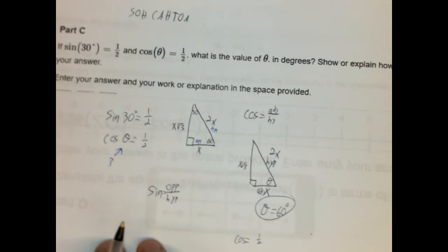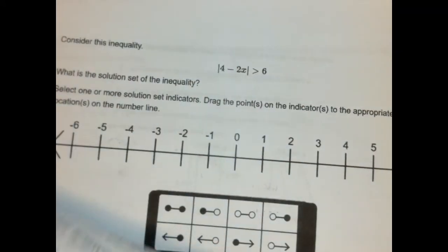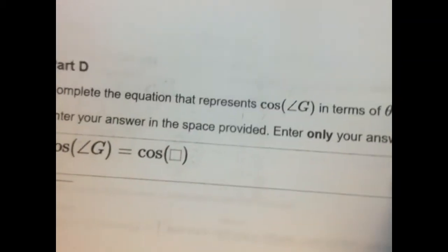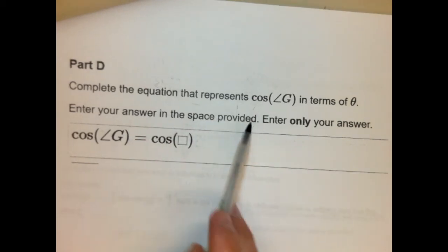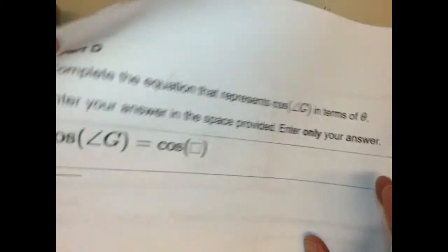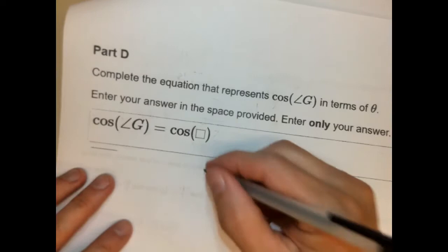Again, it requires a fairly good understanding of special right triangles and trigonometry. So, all right. Let's look at the fourth part. Zoom out a little bit here. There you go. Complete the equation that represents cosine of G in terms of theta. Enter your answer in the space provided. Enter only your answer. Okay. So, let's think about this. We actually have to go back to our triangle, our original triangle. So, let me go ahead and redraw that.